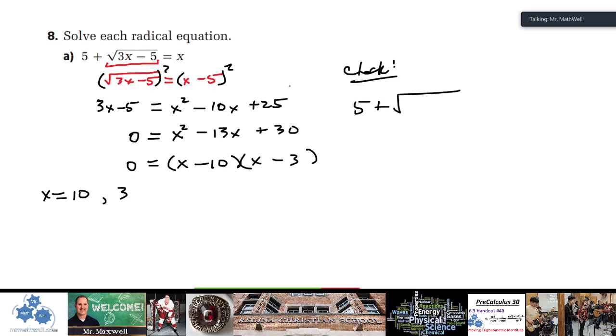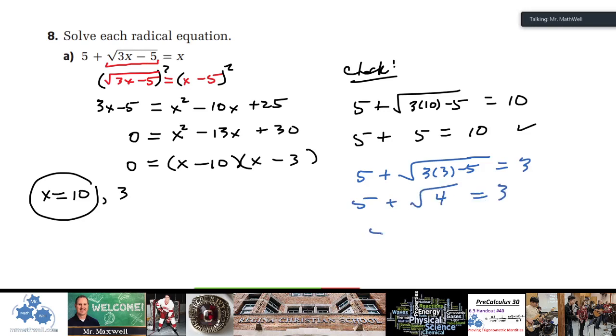So 5 + √(3(10) - 5), let's check the 10 first. 3 times 10 minus 5, that's right, equals, and x is 10. So this is 5 + √(30 - 5) is positive 25. So the square root of 25 is 5. So that looks to be true. So it looks like x = 10 is okay. Let's try x = 3. So 5 + √(3(3) - 5) = 3. So 5 + √(9 - 5 is 4), √4 = 3. And you can see that this is not going to work. That's going to be a 7. It does not equal 3. So we have to reject the answer of x = 3. Does that clear that up for you?